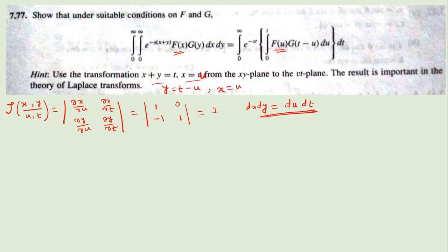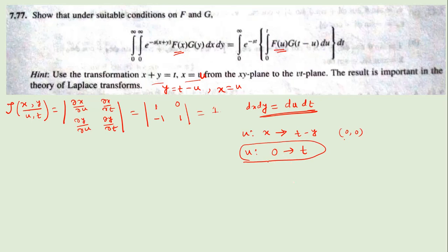Now for the limits: u will be changed from x — which becomes 0 — to t minus y. If you put the values x=0, y=0 you get u from 0 to t. For t, since t equals x plus y, putting in 0 you get 0, and for infinity the upper limit goes to infinity, so t ranges from 0 to infinity.